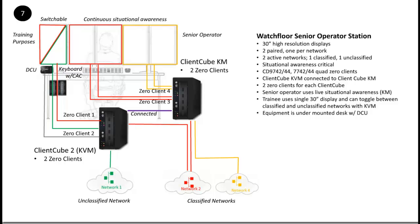The fifth display is connected to a ClientCube KVM version with one classified network and the unclassified network — two zero clients involved. This allows an observing trainee to switch between monitoring the classified network and switching to the unclassified network for other duties like access to reference or test materials. Extremely challenging environment, but the cool thing is interfaces between the two ClientCubes allow us to link the single mouse and keyboard so the two ClientCubes operate exactly the way the customer wanted — taking a nasty problem and turning it into a very elegant solution.